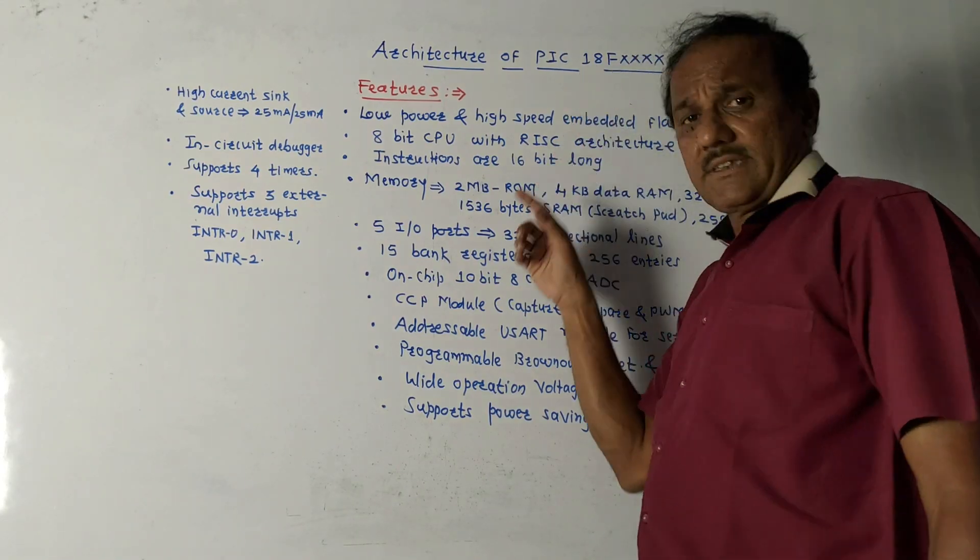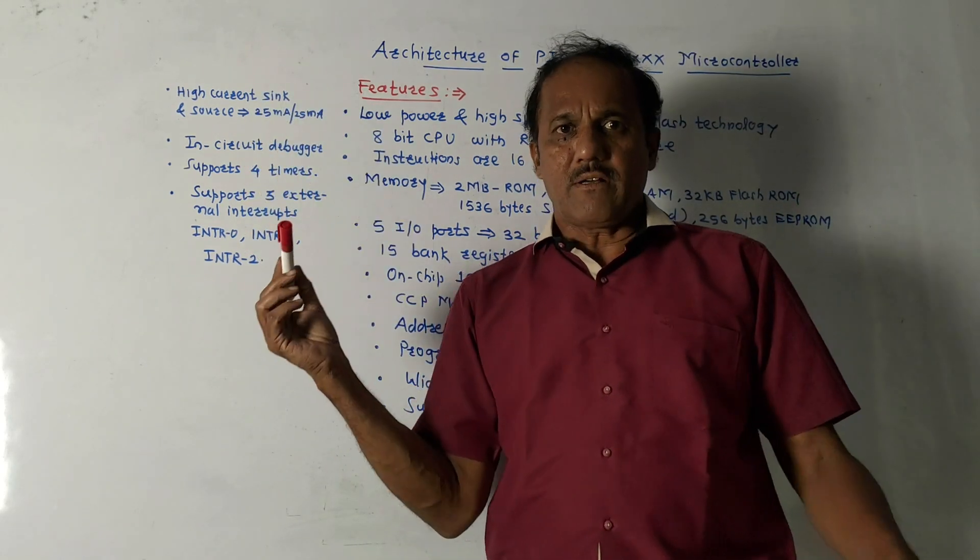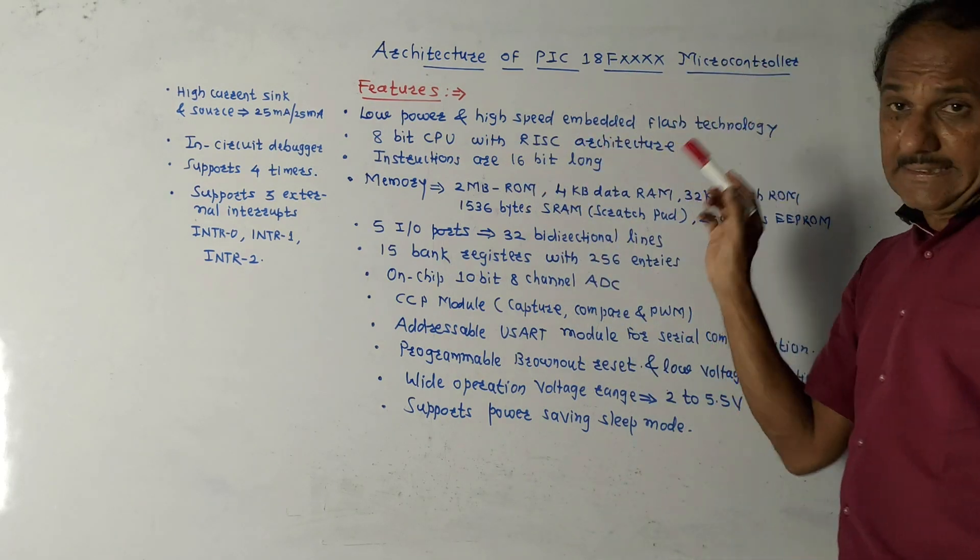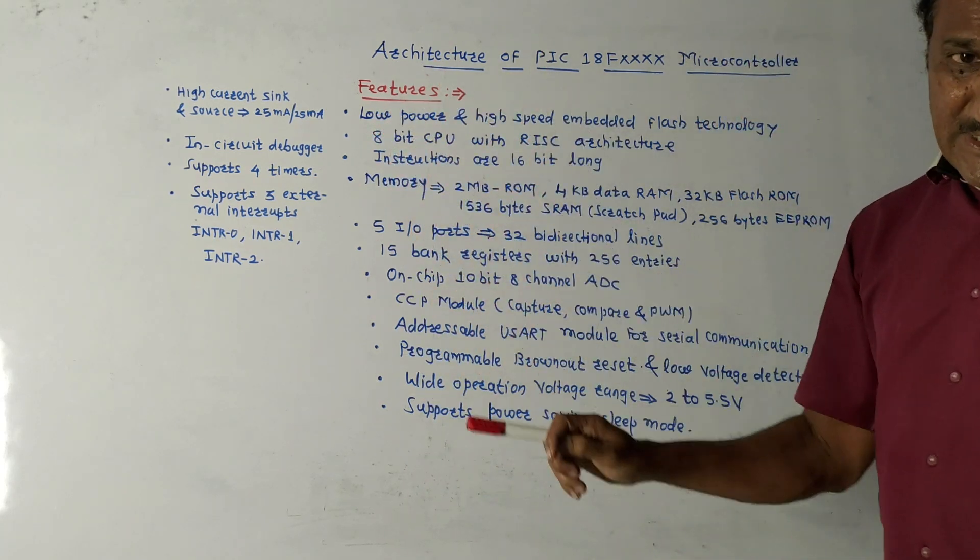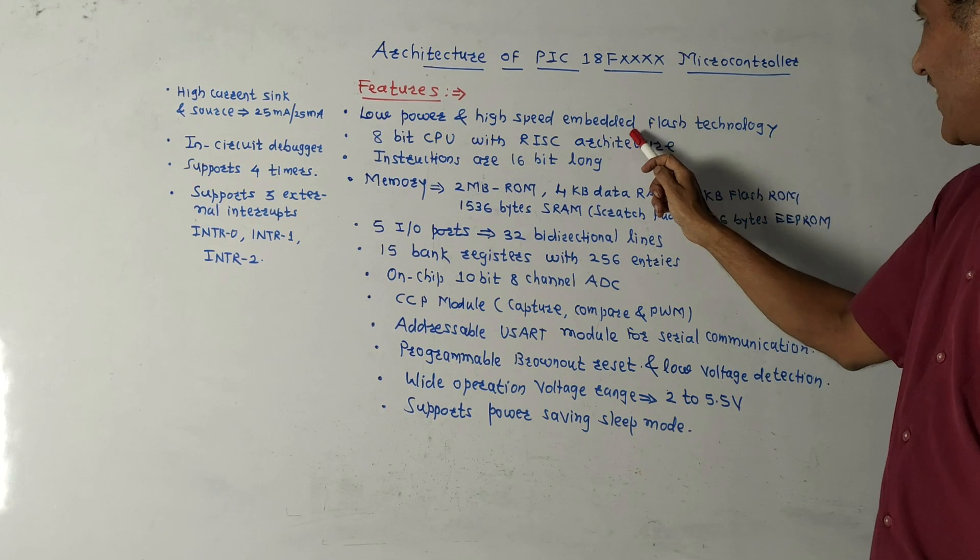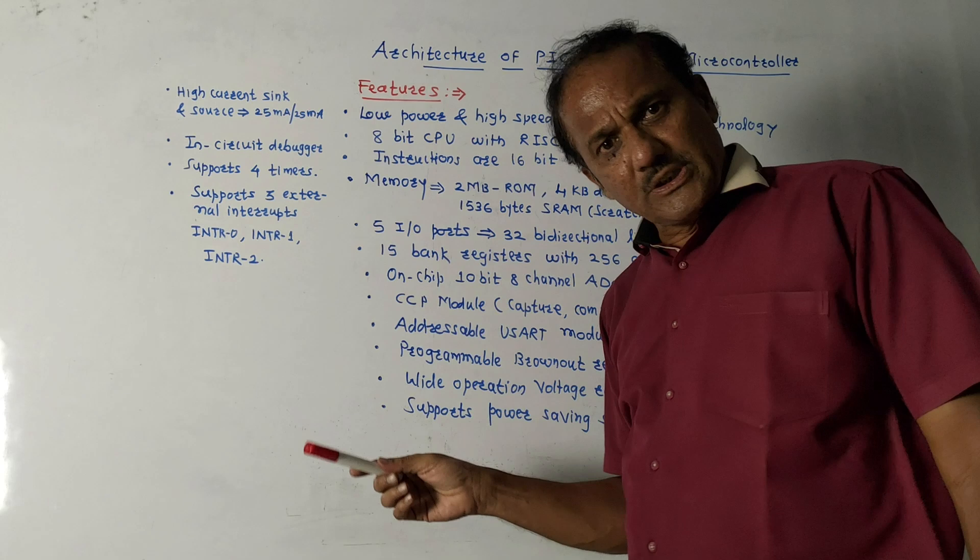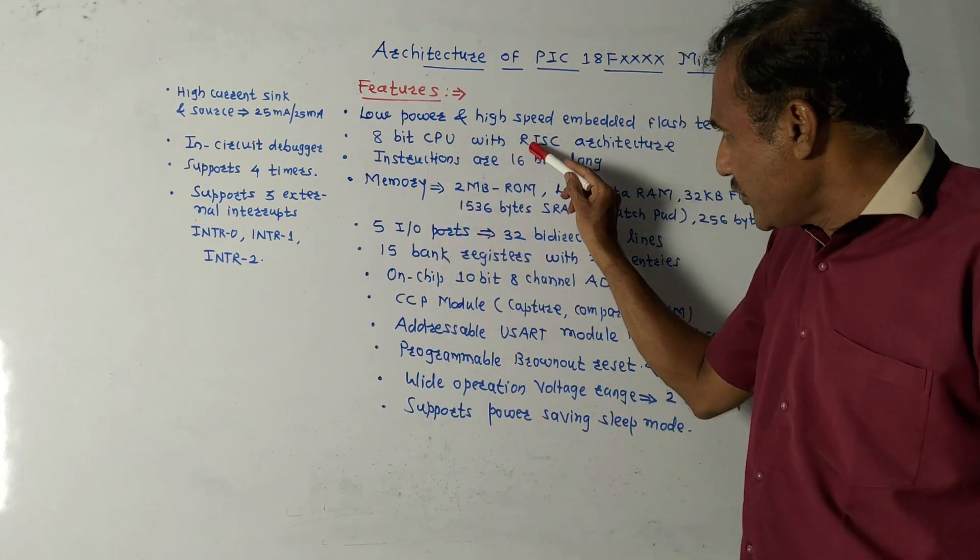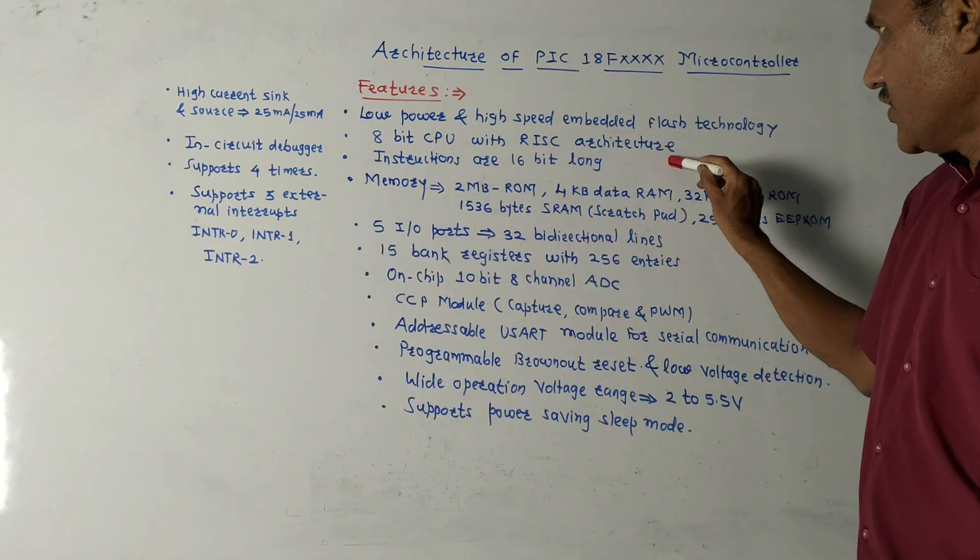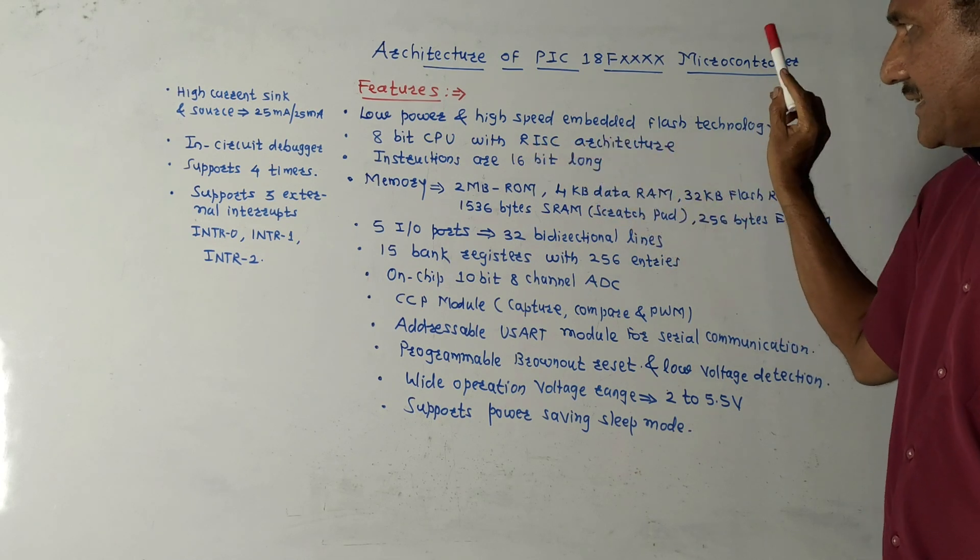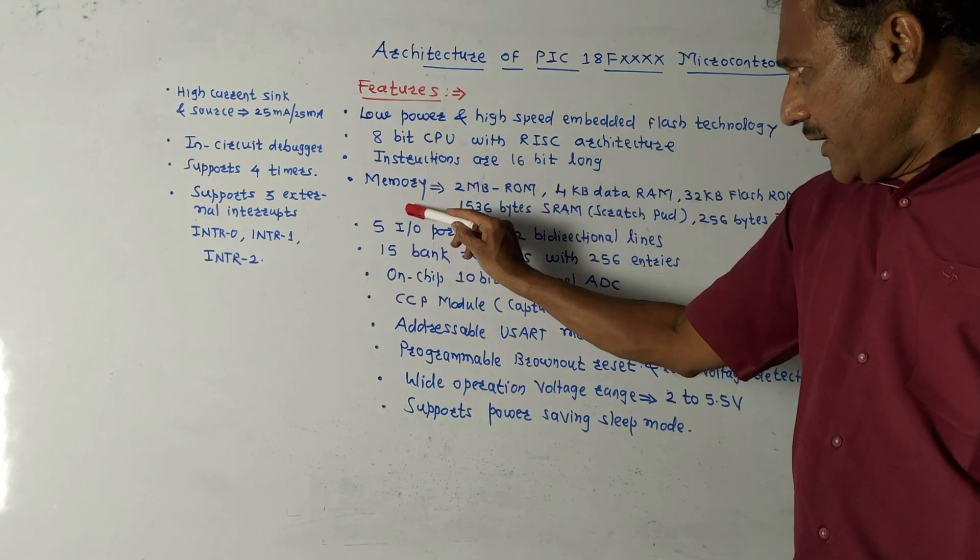Next, features of this PIC microcontroller. We may expect a direct question like list out some important features. First is, it makes use of low power and high speed flash technology, which is embedded flash technology. Its CPU, central processing unit, is 8-bit with reduced instruction set. It makes use of RISC architecture. Instructions are 16-bit long.